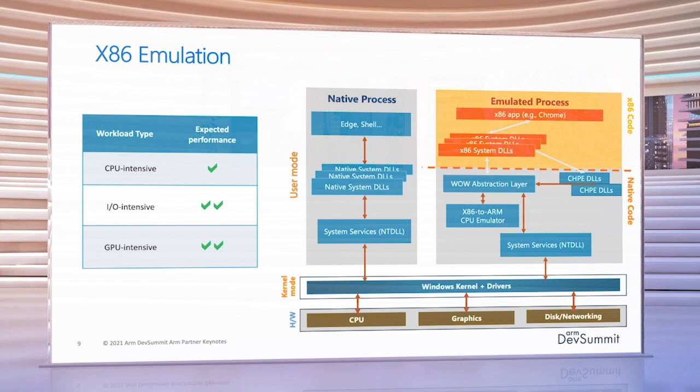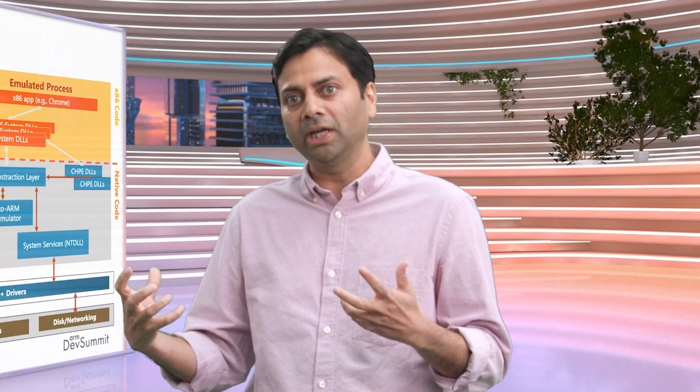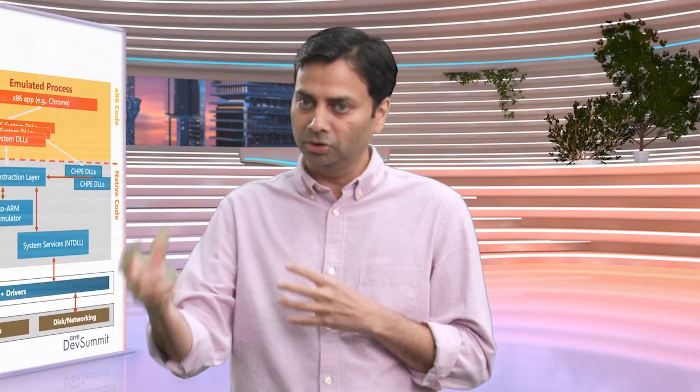So let's see how that breaks down by scenario. For a CPU-intensive app, with all of the work we've done with JIT optimizations, caching, and CHPE, you get good performance. For an I/O or GPU-intensive workload — where the majority of the time is being spent in the kernel or within device drivers — you're primarily running native code because that's already ARM64, and you get awesome performance.